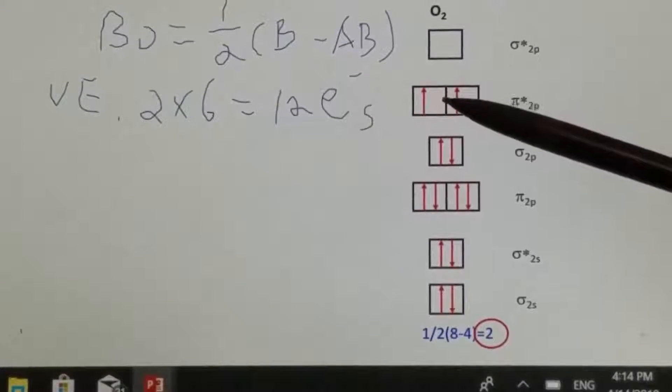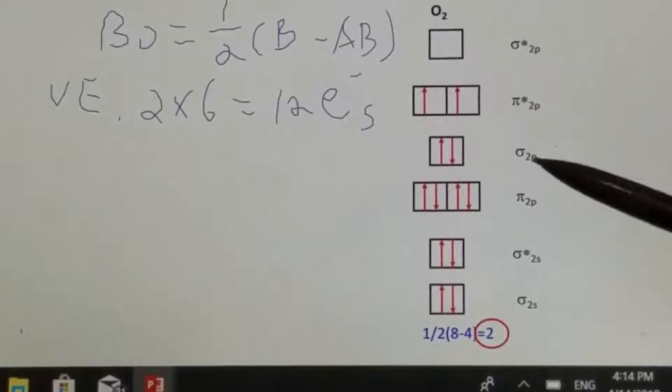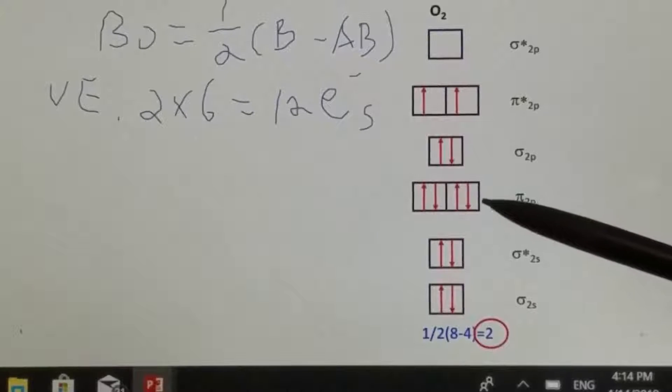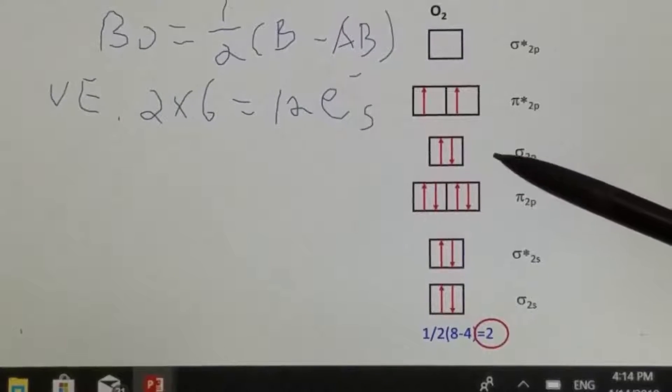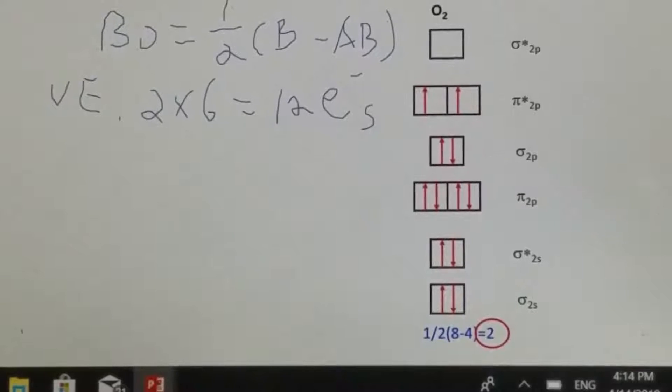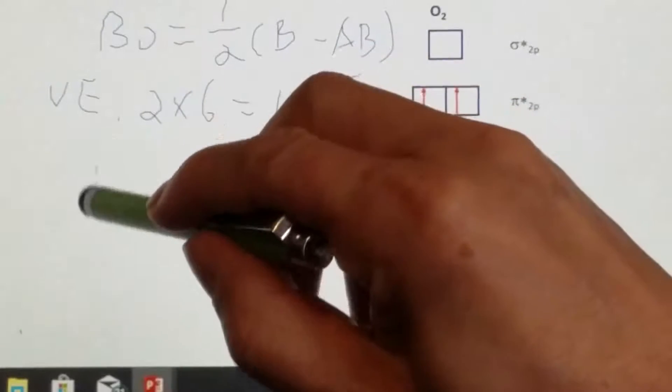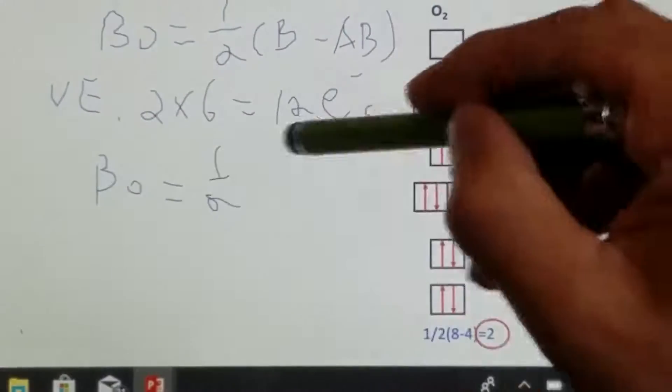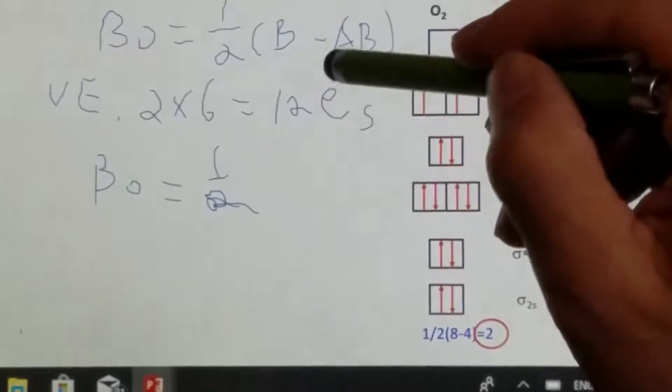Now let's take a look. The number of bonding electrons: sigma 2s, that's 2, pi 2p, that's another 4, that's 6, and then sigma 2p, that's 8, total of 8. The bond order equals one half, that's 2.